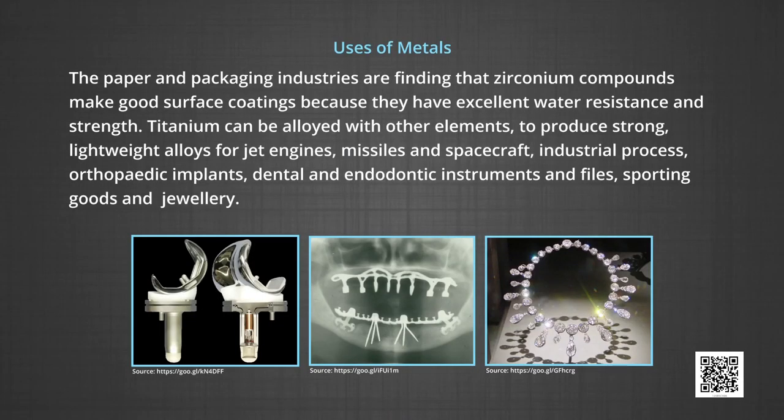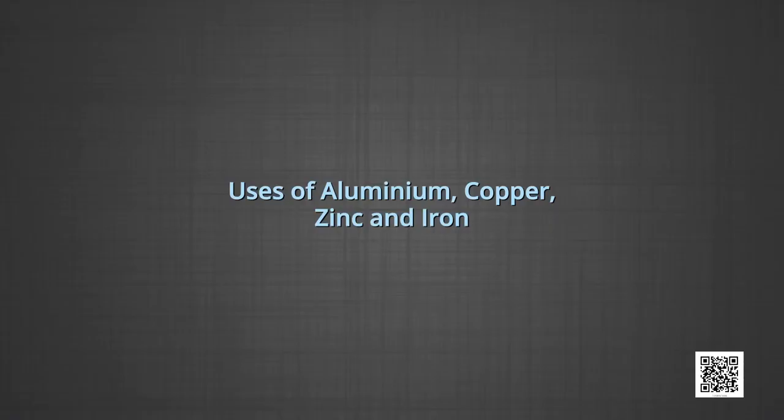Titanium can be alloyed with other elements to produce strong lightweight alloys for jet engines, missiles and spacecraft. Industrial processes, orthopedic implants, dental and endodontic instruments and files, sporting goods and jewelry. The main physical property of both titanium and zirconium which belong to the same group is that they are resistant to corrosion and have a high strength to density ratio.